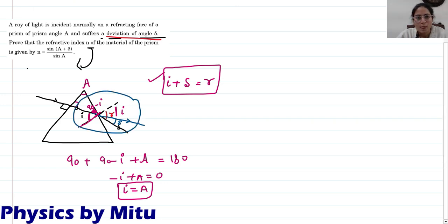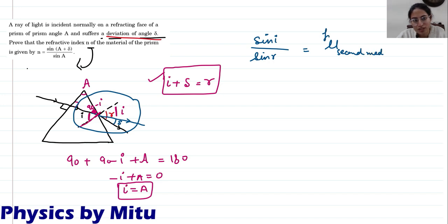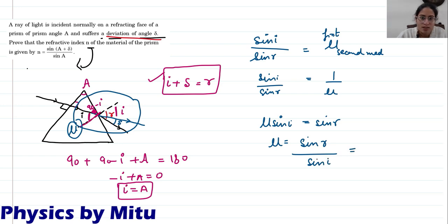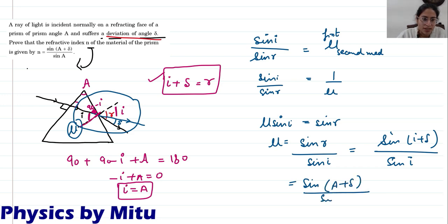Now, apply Snell's law at this surface. Sin i by sin r is the refractive index of the second medium with respect to the first. Since it goes from glass to air, sin i by sin r equals 1 by mu. Cross-multiplying, mu sin i equals sin r, so mu equals sin r upon sin i. Now r equals i plus delta, so mu equals sin(i + delta) upon sin i. Replacing i with A, mu equals sin(A + delta) upon sin A. This is what we had to prove.